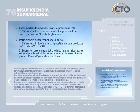Insuficiencia suprarrenal. Se caracteriza por la ausencia de cortisol y se distinguen dos formas. Por un lado, la insuficiencia suprarrenal primaria o enfermedad de Addison, desencadenada por destrucción autoinmune de más del 90% de la glándula. Por otro, la insuficiencia suprarrenal secundaria, donde la ausencia de cortisol se debe a la ausencia de estímulo de la ACTH, ya sea por enfermedad hipofisiaria o hipotalámica, o de manera más frecuente, por la supresión ejercida sobre la ACTH con la administración crónica de glucocorticoides.